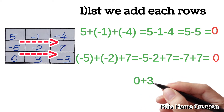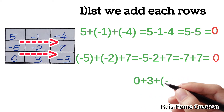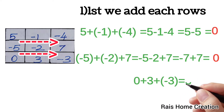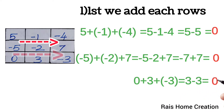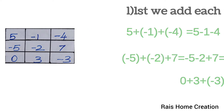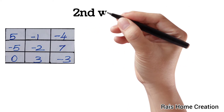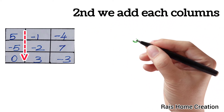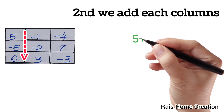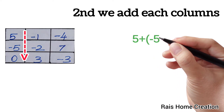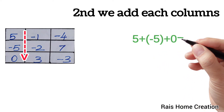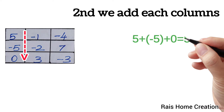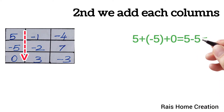Next, we will add 0 plus 3 plus minus 3 equal to 3 minus 3 equal to 0. Next, we will add each column. 5 plus minus 5 plus 0 equal to 5 minus 5 equal to 0.